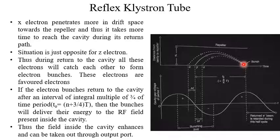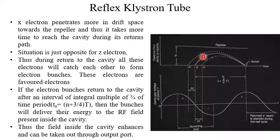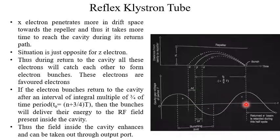These electrons are called the favored electrons. Near the cavity, during the return journey, all electrons within a certain range will form electron bunches. If the electron bunches return to the cavity after an interval of an integral multiple of 3/4 of the time period T — that is, if we take a reference electron, the electron bunches return such that the time difference is 3/4 of T — as shown in the figure, from this point to that point it is 3/4 of T.